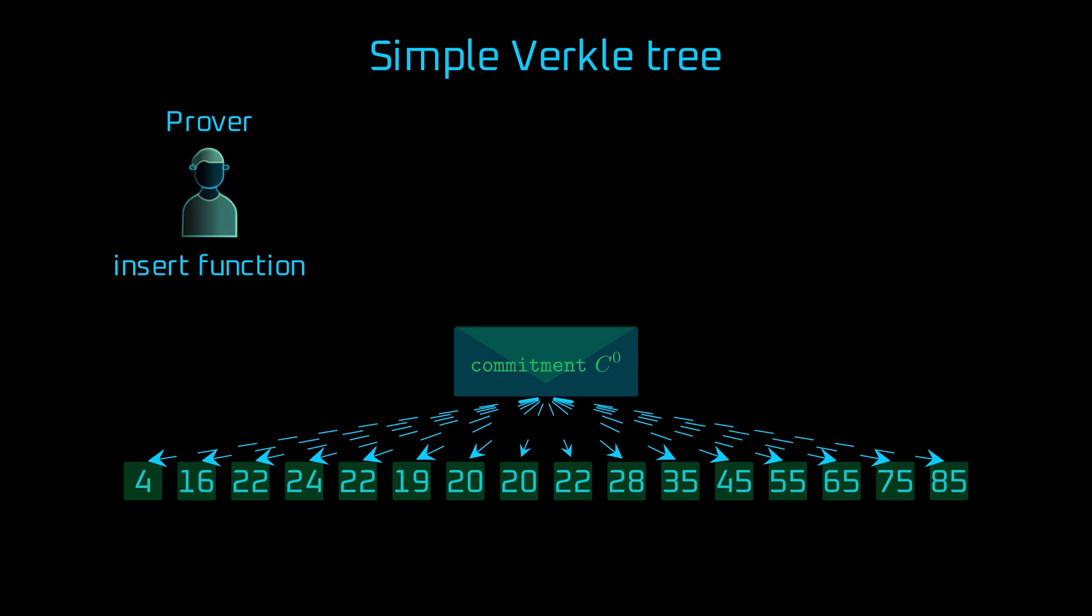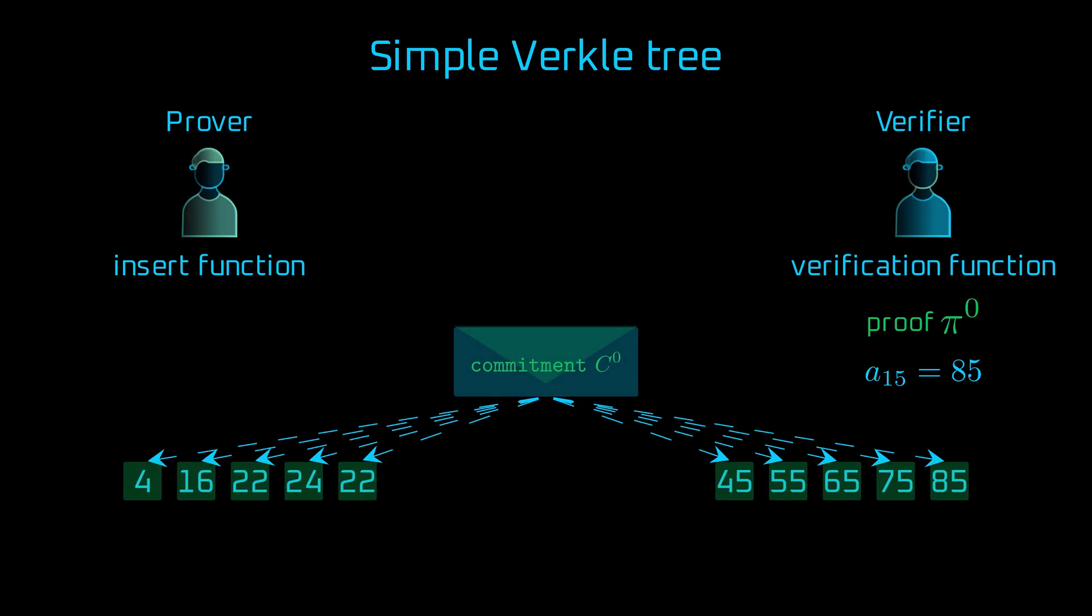On the other hand, a function which verifies that an item belongs to the data structure acts like a verifier in the commitment scheme. Verifiers can check that a number belongs to the vector using a commitment C0, proof pi0, and the opening. Remember that commitment is a single elliptic curve point. Because of that, the parent node size is not affected by the number of children. So the vector can have a lot more elements than 16.